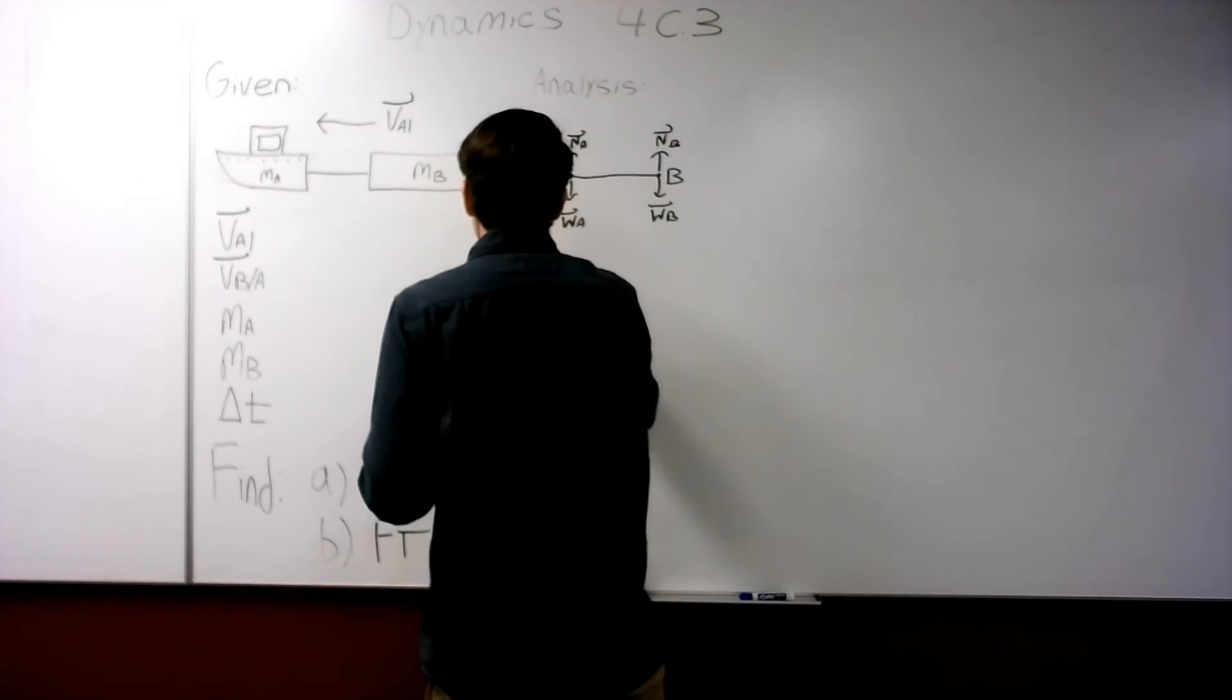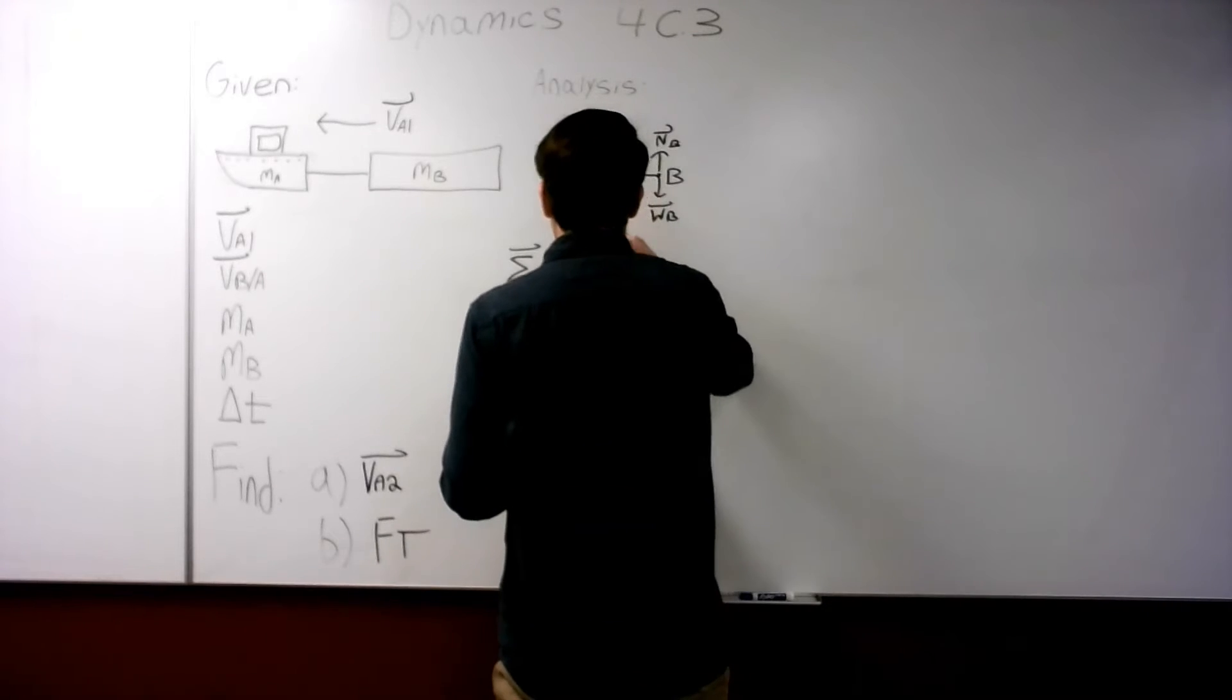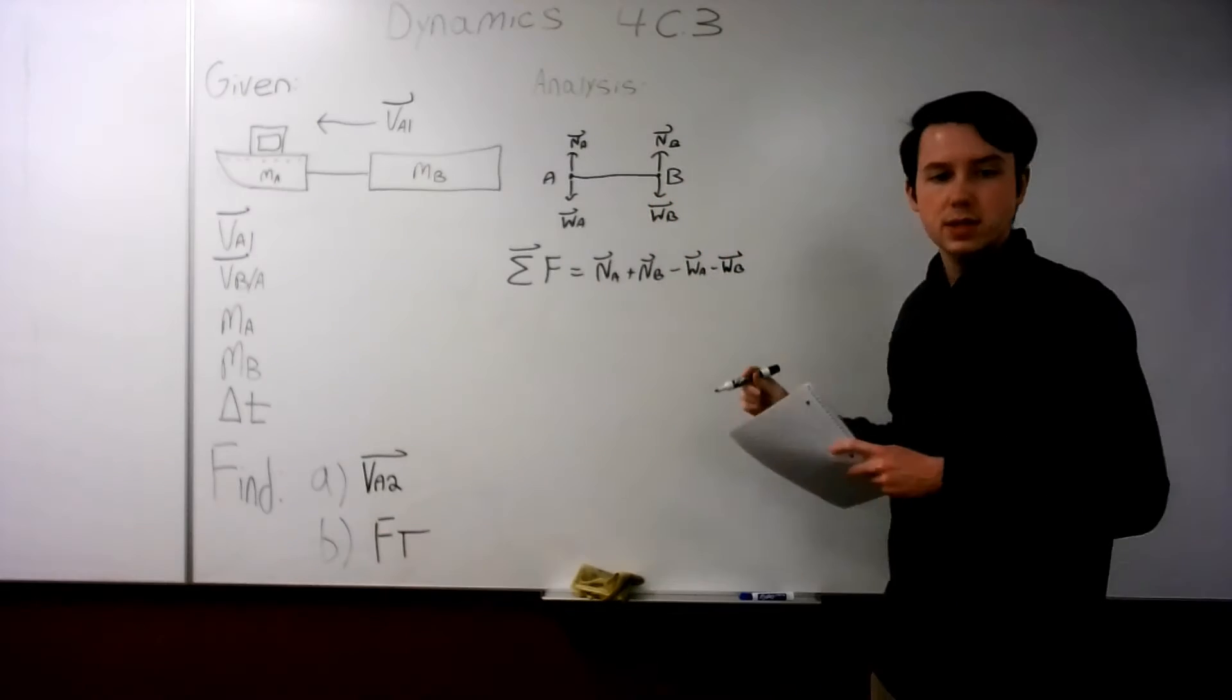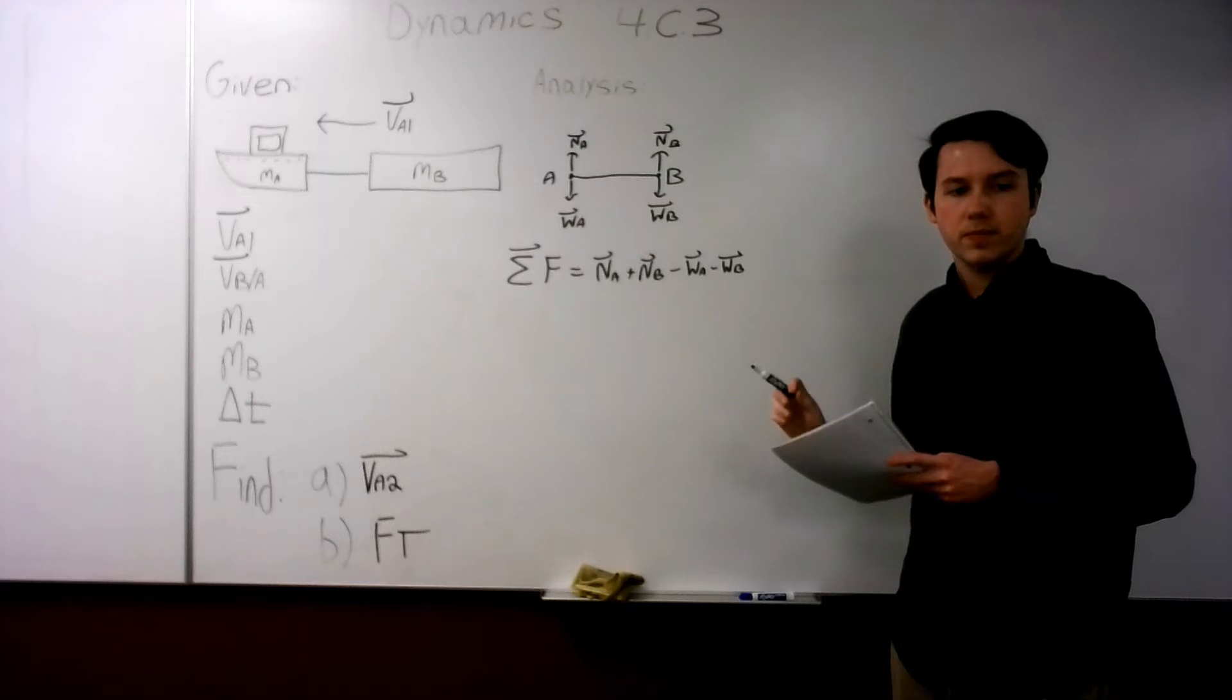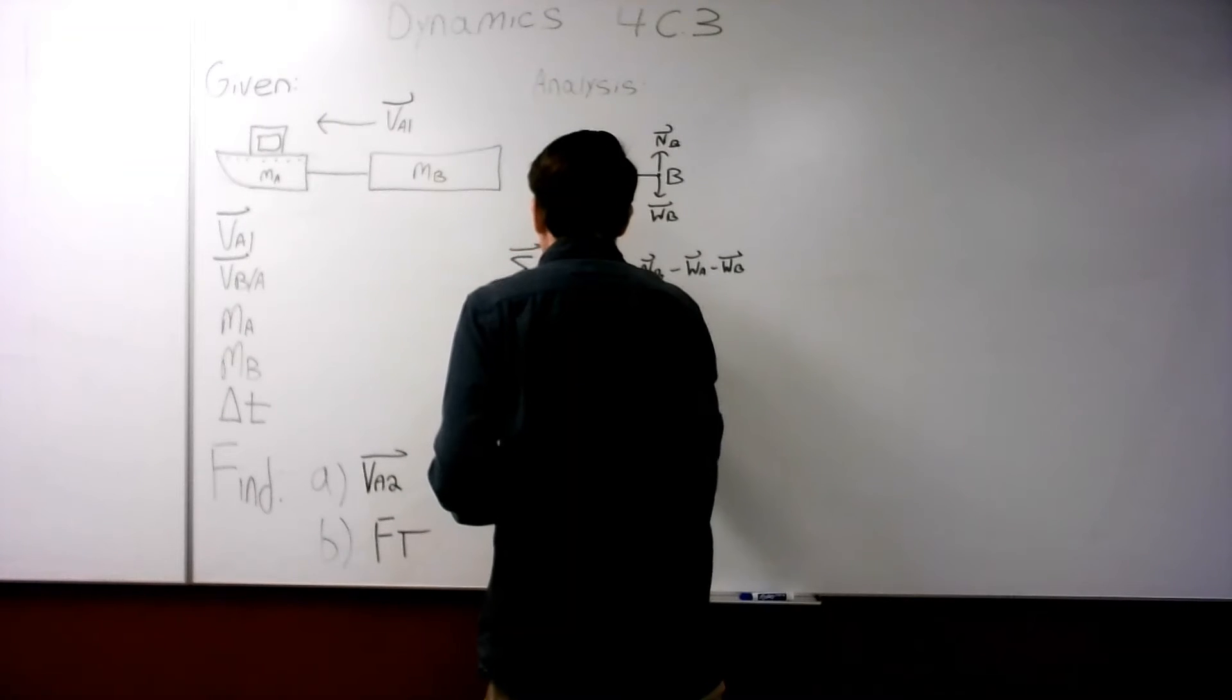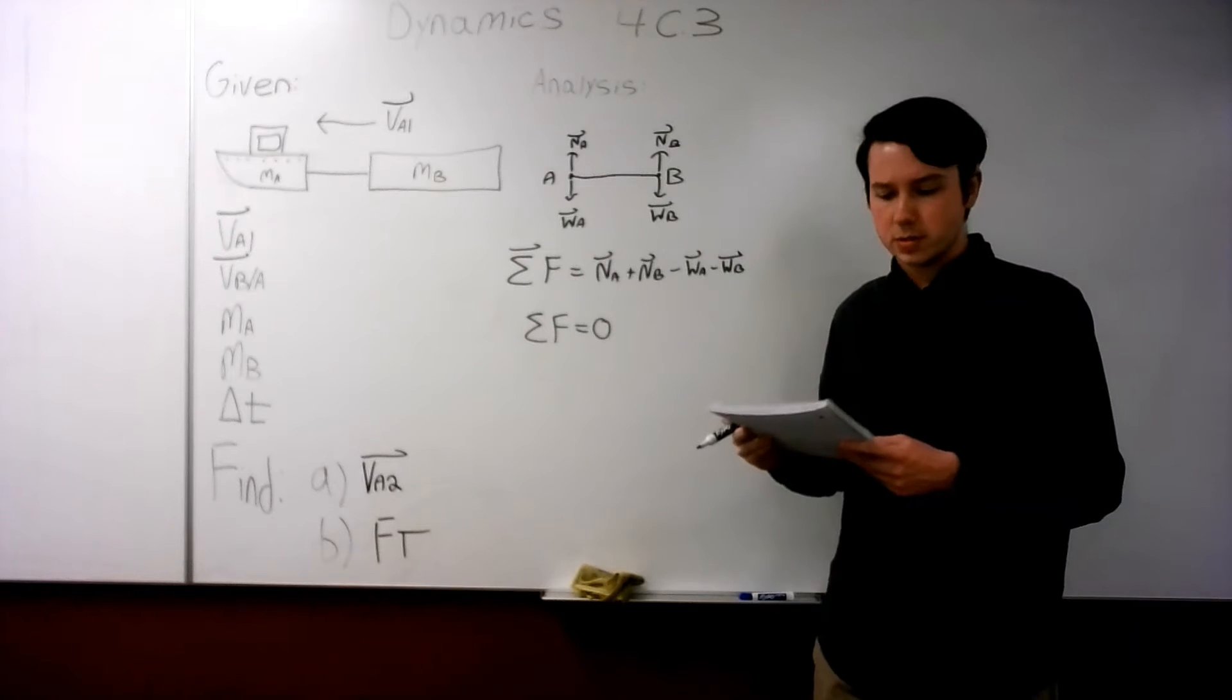Now we can sum the forces. So the sum of the forces is equal to NA plus NB minus WA minus WB. But since the system is in equilibrium in this direction, we know that N is equal to W. If they weren't, the tugboat would either be flying or sinking. So the sum of the forces here is equal to zero. Therefore, linear momentum is conserved. And this allows us to use the conservation linear momentum equations.